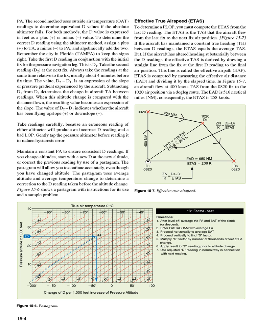To determine the correct D reading using the altimeter method, assign a plus to TA, a minus to PA, and algebraically add the two. Remember the city in Florida, Tampa, to keep the signs right. Take the first D reading in conjunction with the initial fix for the pressure navigation leg. This is D1. Take the second reading, D2, at the next fix. Always take the readings at the same time relative to the fix, usually about four minutes before fix time.